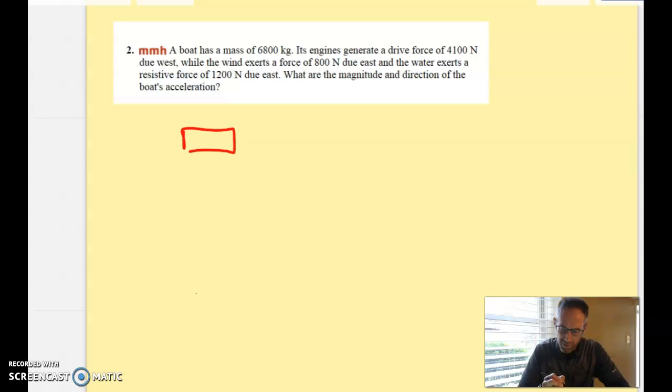I hope you took the boat and said that the engines are generating a drive force 4,100 newtons to the west. Let's say that's FD, force of drive. And then there's a wind exerting 800 newton force to the east. Let's try to do a good job drawing that to scale. And then the water exerts a resistive force of 1,200 east, Fr for resistive force.